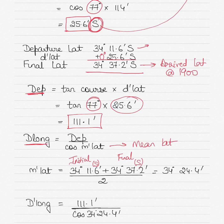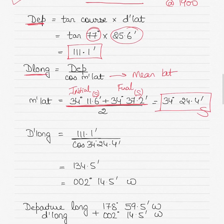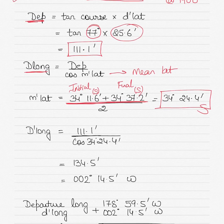So take the initial latitude and final latitude, add them and divide by two. If they were in different hemispheres you would subtract and divide by two. In this case, adding and dividing by two gives a mean latitude of 34 degrees 24.4 minutes South. Then D-long equals departure divided by cos(M-lat).